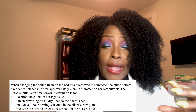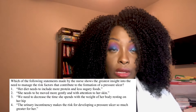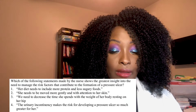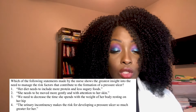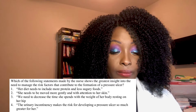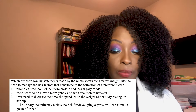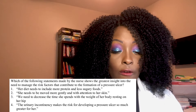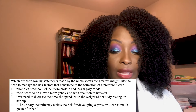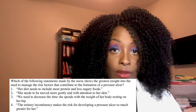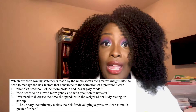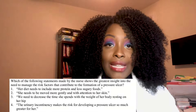Next question: which of the following statements made by the nurse shows the greatest insight into managing risk factors that contribute to pressure ulcer formation? One — her diet needs to include more protein and less sugary foods. Two — she needs to be moved more gently with attention to her skin. Three — we need to decrease the time she spends with the weight on her body resting on her hip. Four — the urinary incontinence makes the risk for developing a pressure ulcer so much greater. The correct answer is three — we need to decrease the time the weight rests on her hip, because you want to take pressure off those bony prominences such as the hip, coccyx, and heels.